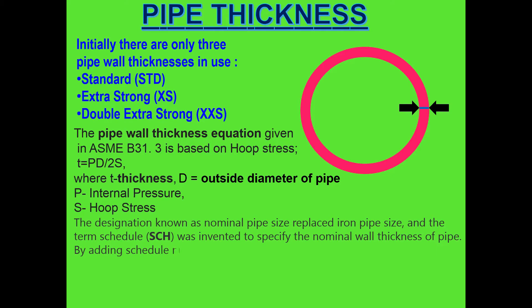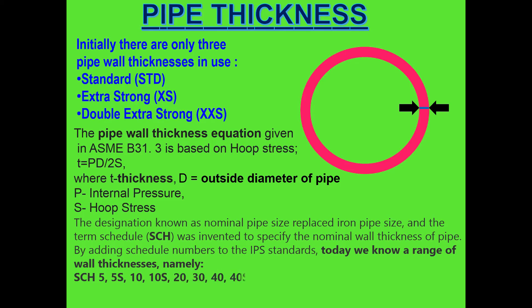The term schedule (SCH) was invented to specify the nominal wall thickness of pipe. By adding schedule numbers to the IPS standards, today we know a range of wall thicknesses, namely: SCH 5, 5S, 10, 10S, 20, 30, 40, 40S, 60, 80, 80S, 100, 120, 140, 160, STD, XS, and double XS.